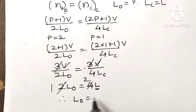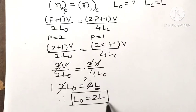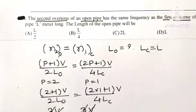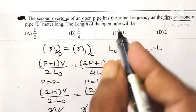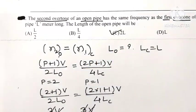Therefore, the length of the open pipe is equal to 2 times the length of the closed pipe, that is L₀ equals 2L. So, out of the 4 options, option C is the correct option for this question.